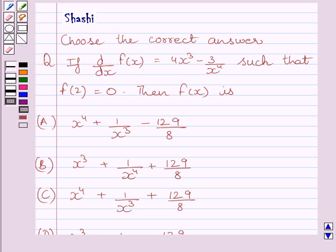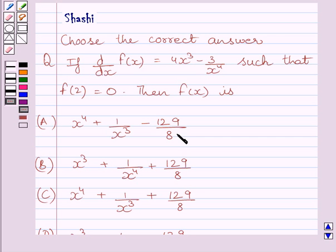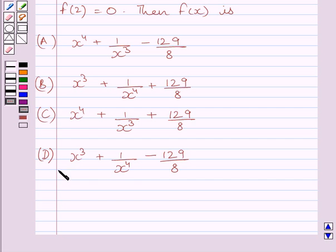Hello and welcome to the session. Let us discuss the following question. The question says: choose the correct answer. If d/dx of f(x) is equal to 4x³ minus 3 upon x⁴, such that f(2) is equal to 0, then f(x) is: (A) x⁴ + 1/x³ − 129/8, (B) x³ + 1/x⁴ + 129/8, (C) x⁴ + 1/x³ + 129/8, (D) x³ + 1/x⁴ − 129/8. We have to choose the correct answer from A, B, C, and D.